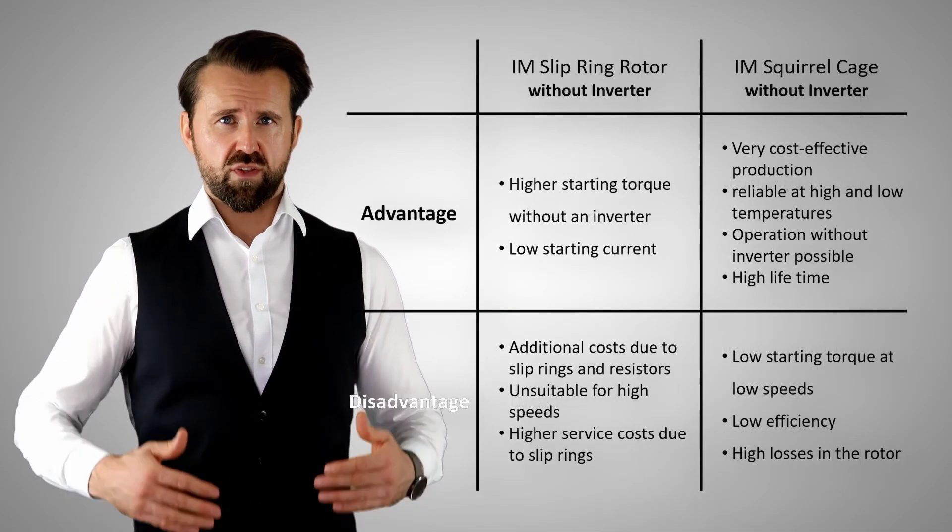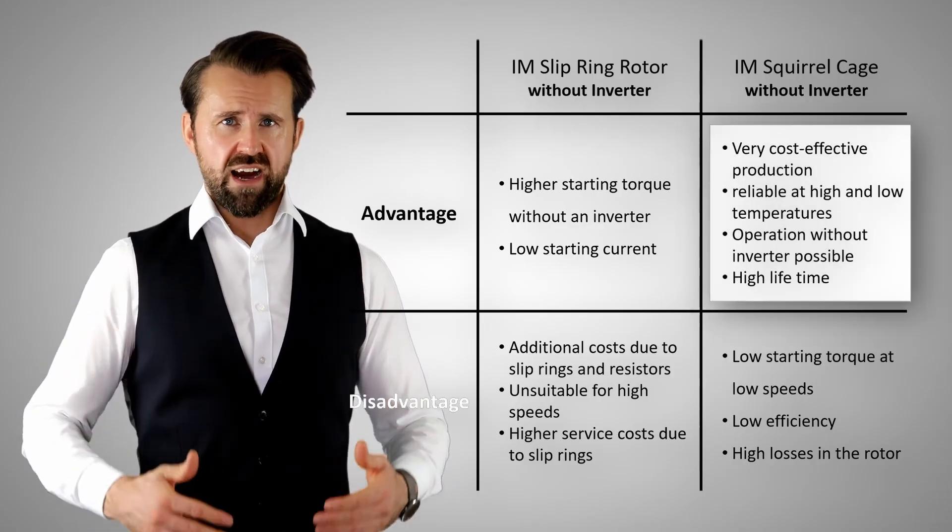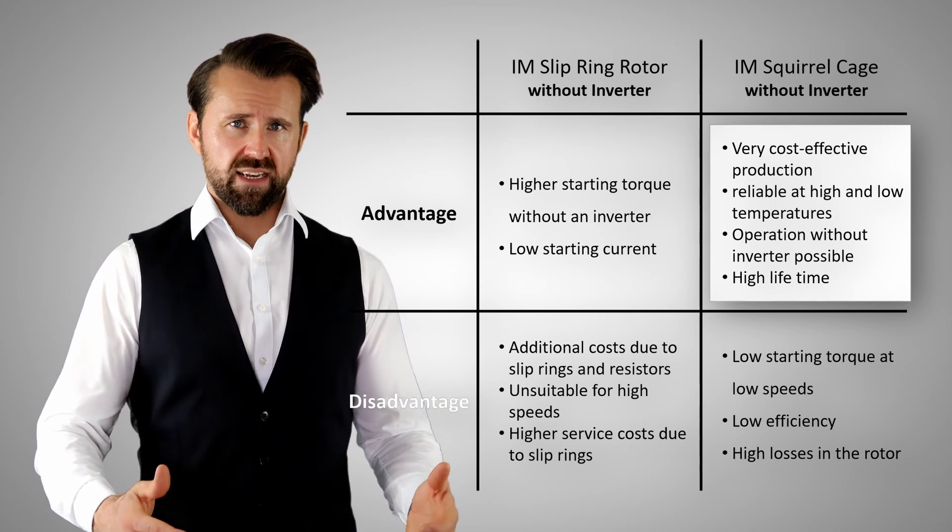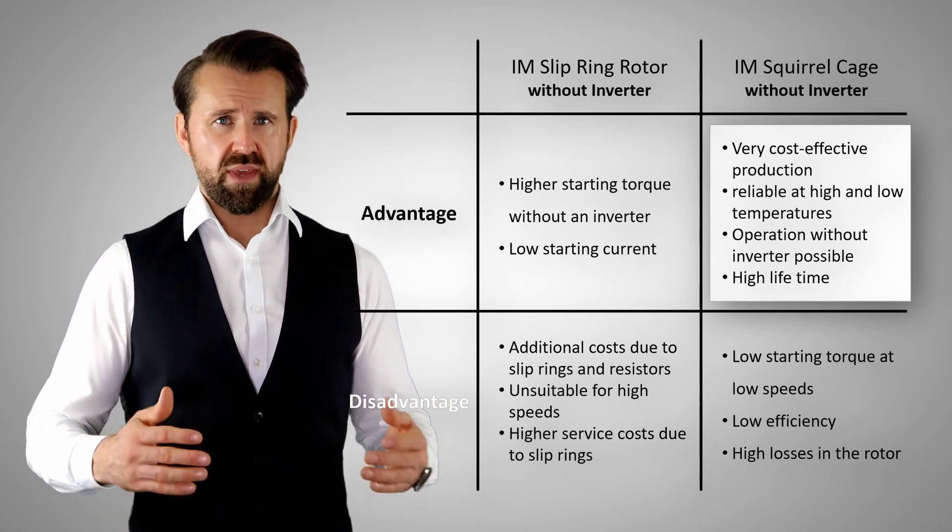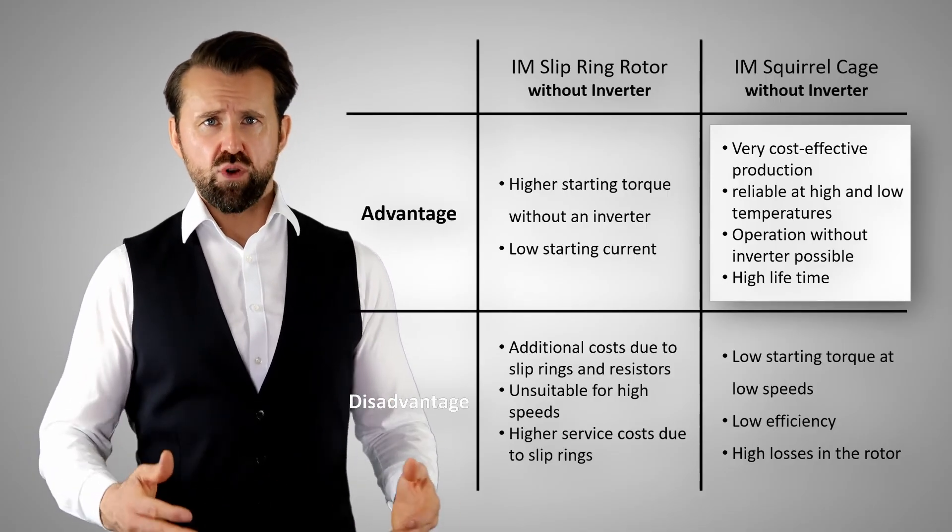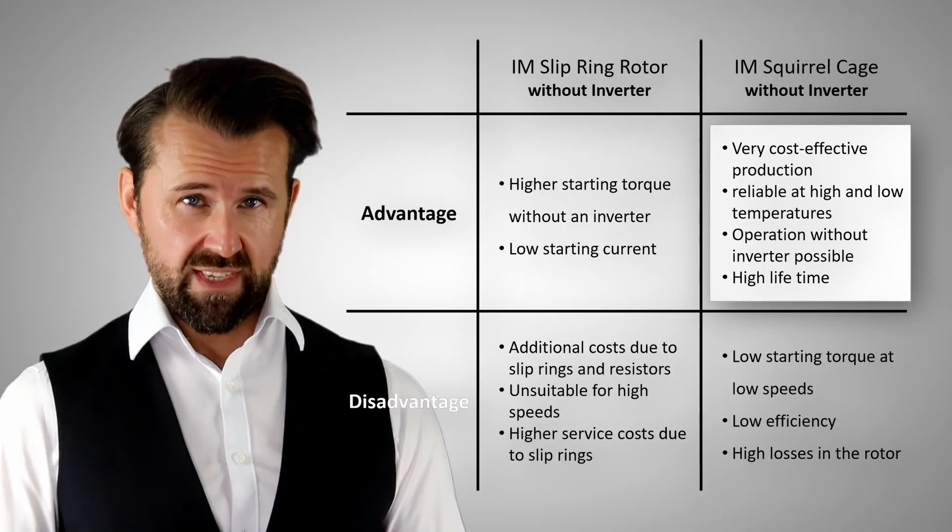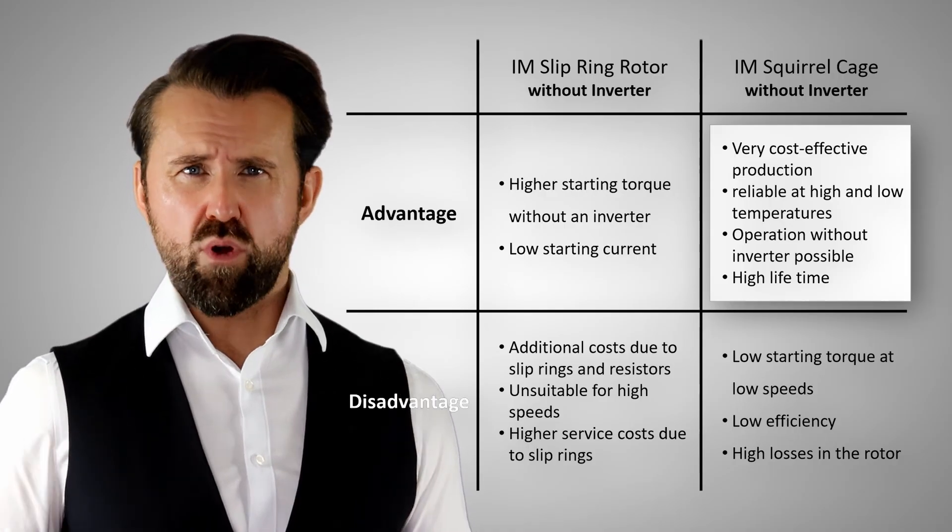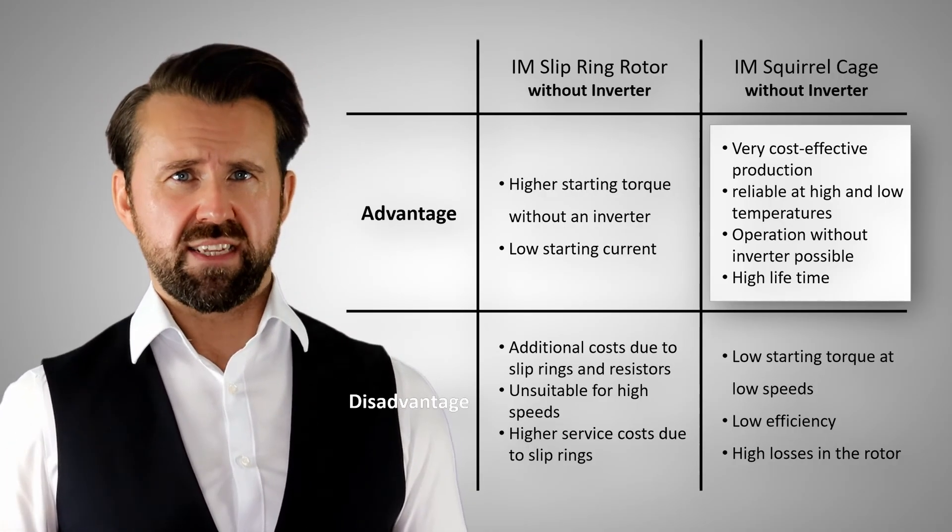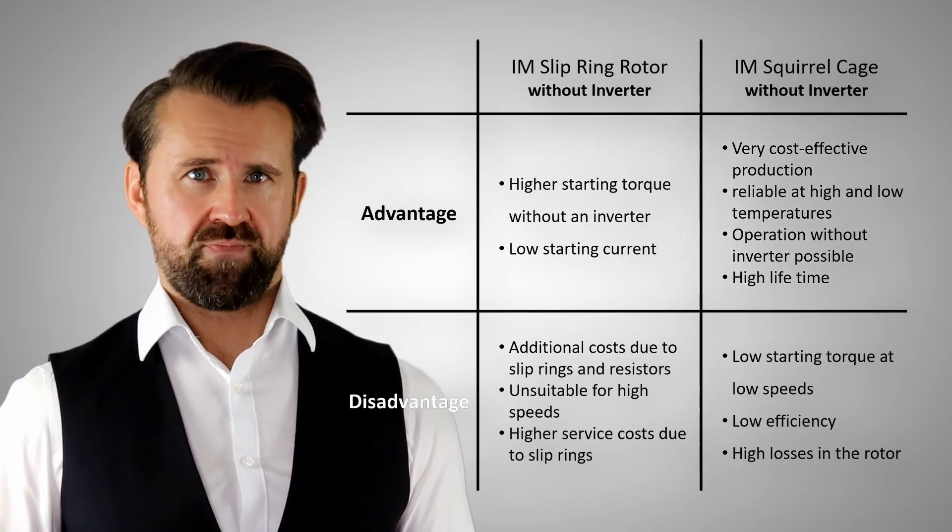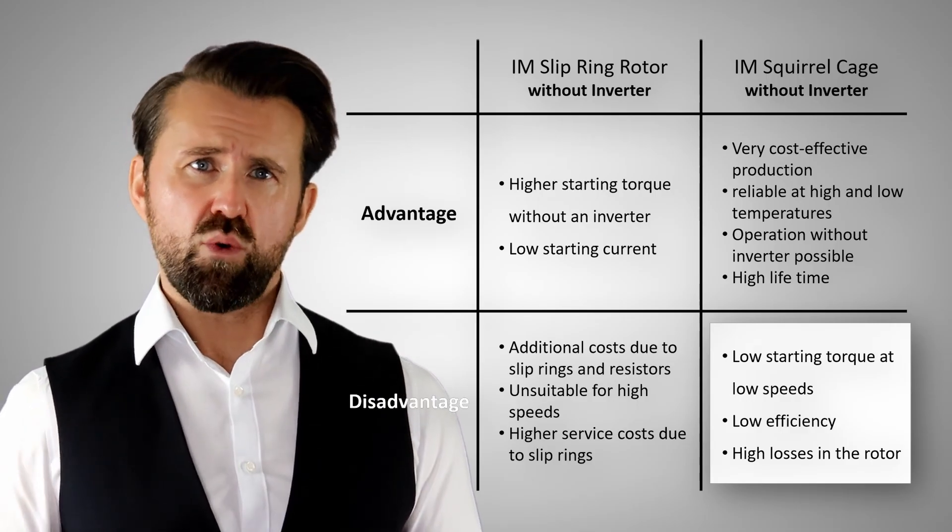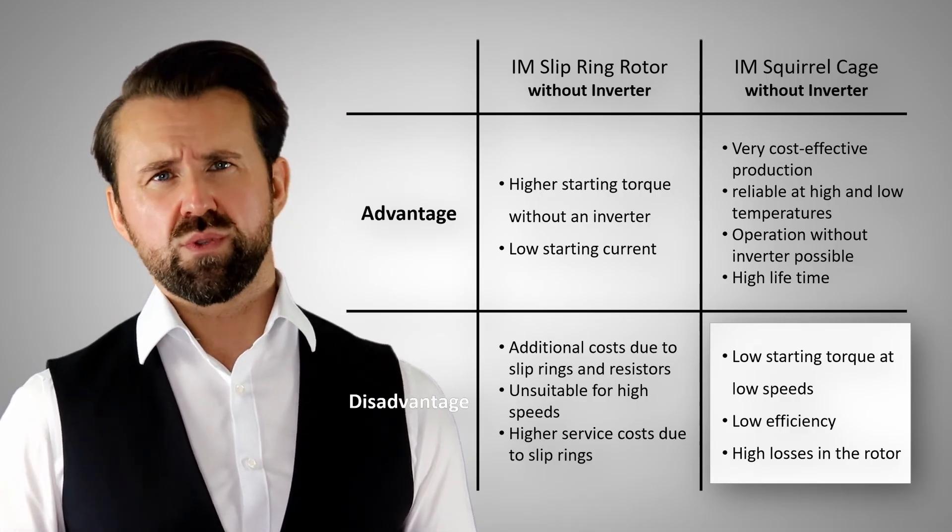The main advantage of squirrel cage induction motors are the low production costs for the rotor compared to a permanent magnet synchronous motor. Only reluctance motors are cheaper. You can find a video about this in the description. The induction motor is very robust against high temperatures. You do not have to worry about demagnetization of magnets like with the PMSM. The main disadvantage is the low starting torque and the low efficiency if you do not use an inverter.